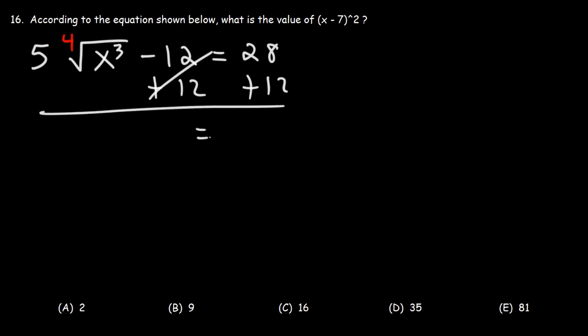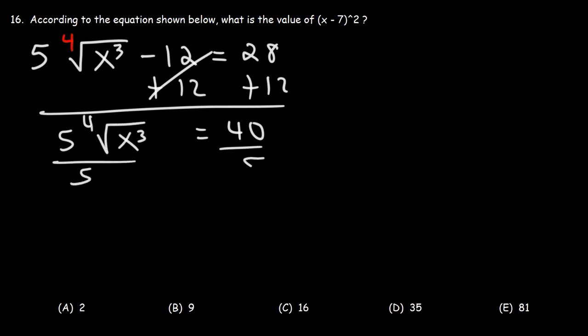28 plus 12 is 40. Now our next step is to divide both sides by 5. 40 divided by 5 is 8. The fourth root of x cubed is equal to 8.